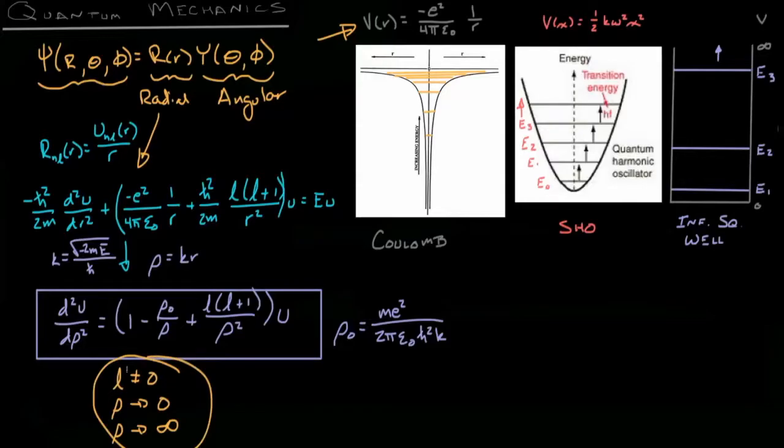So, in summary, this is our first time looking at an actual changing potential in three dimensions. We're looking at the Coulomb potential, which closely reflects the actual scenario in a hydrogen atom. And we saw that it introduces purely changes to the radial component of the wave equation.